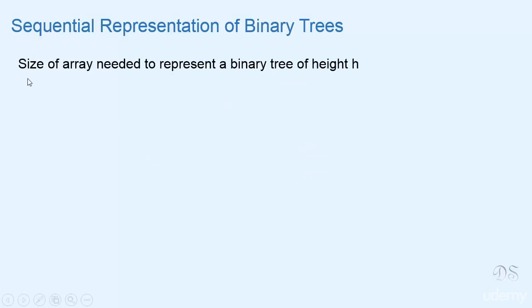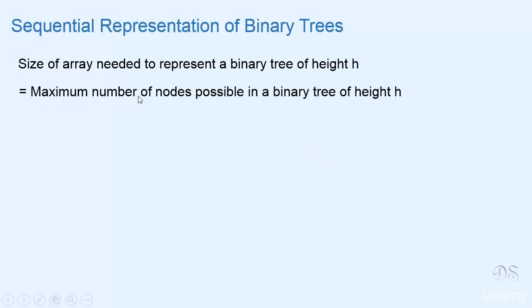Now the size of array needed to represent a binary tree of height h will be equal to the maximum number of nodes possible in a binary tree of height h. And we know that this number is 2 raised to the power h minus 1.